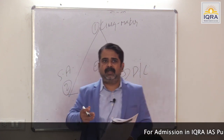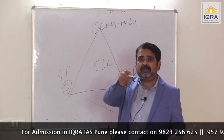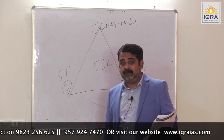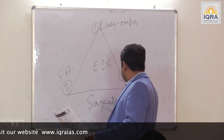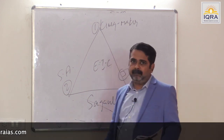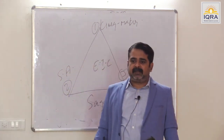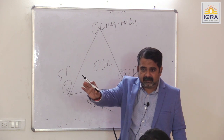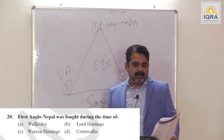The Gurkha army used to enter the Tarai region and the border between India and Nepal was not clear. Lord Hastings had to specify the borders, which was followed by the Treaty of Sugauli in 1816 — very important. By this treaty, the Gurkhas accepted the British resident in Kathmandu and handed over the Tarai region and Doon area. Answer is B.